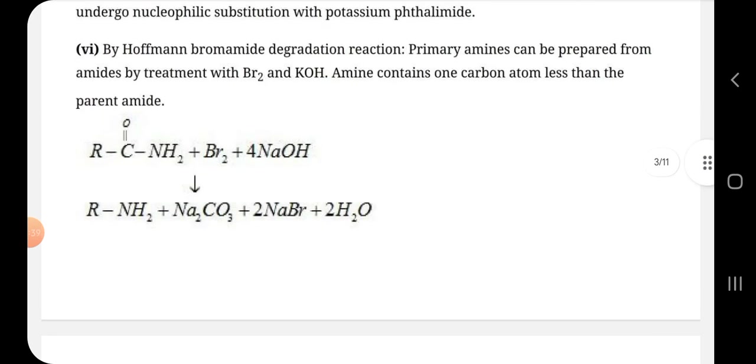By Hoffman bromide degradation reaction, i.e. HBD reaction, primary amine can be prepared from amides by treatment with bromine and KOH. It contains one carbon atom less than the parent amide.